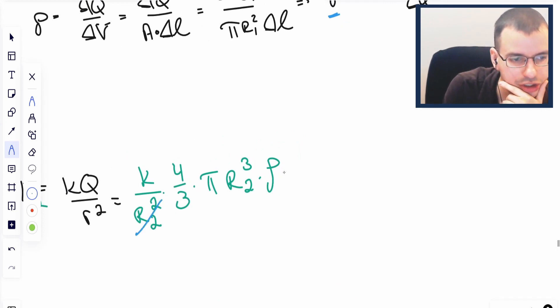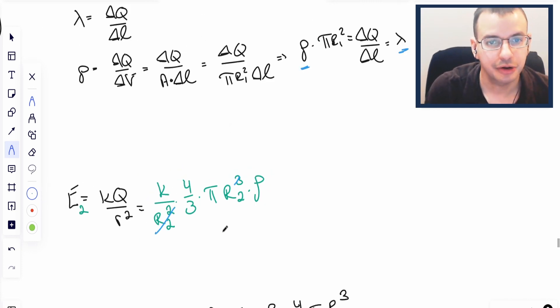We've got R2 cubed and R2 squared. R2 squared on the bottom cancels with one of the R2 squareds up top, so we're left with R2.